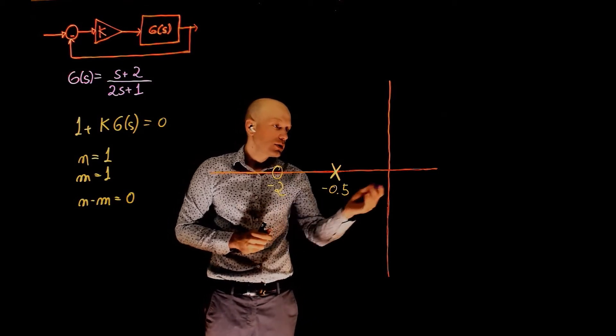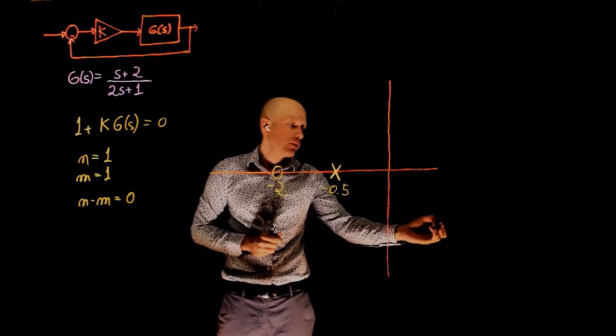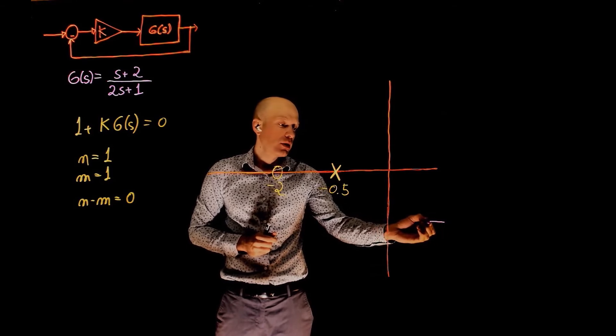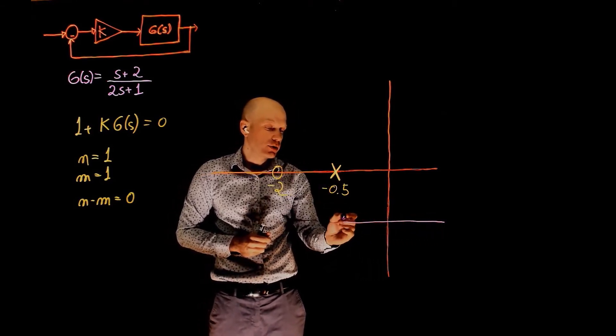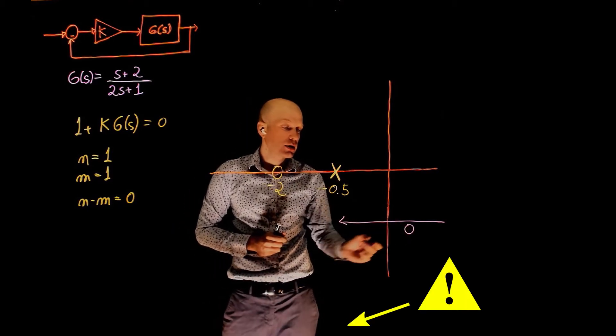We know that the root locus exists at the left of an odd number of poles and zeros. So let's start counting poles and zeros. If we start from positive infinity, at this region here, we see that we haven't encountered any poles or zeros, the count here is zero.